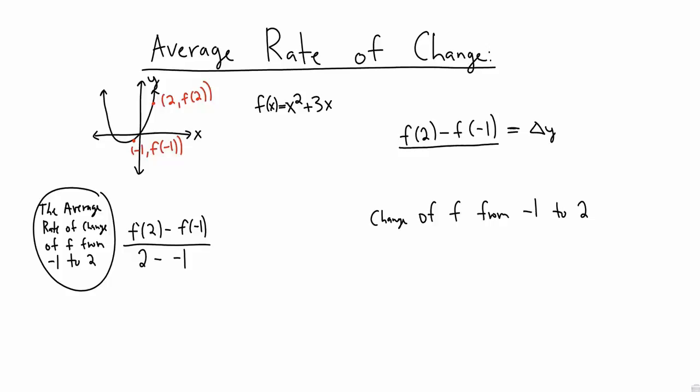We take this and divide it by 2 minus negative 1. So, what is that denominator? Well, that's the change in x, the change in the inputs, the inputs that those outputs came from.